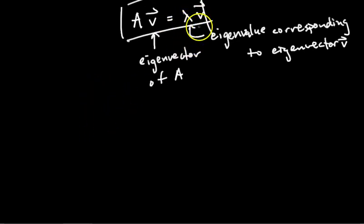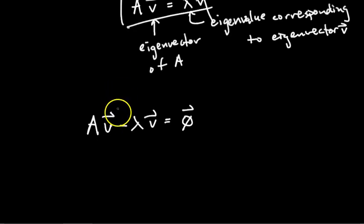Just bear with me for a second. Let's subtract from both sides lambda times V. So I have this equation AV equals lambda V and I'm gonna subtract lambda V from both sides. So what do I get? I get A times V minus lambda times V equals the zero vector.